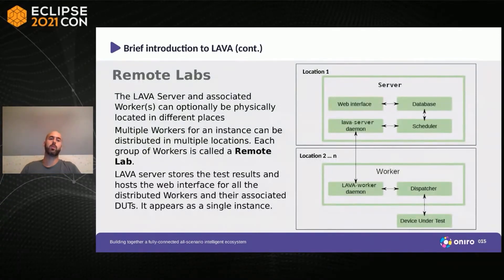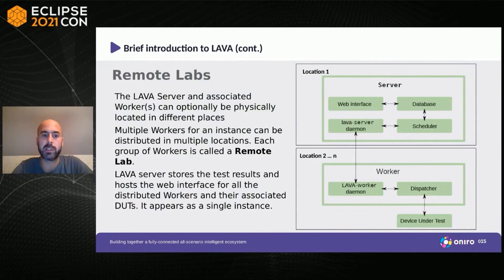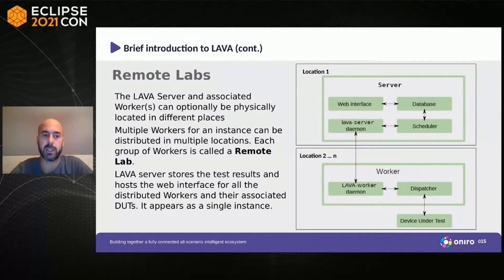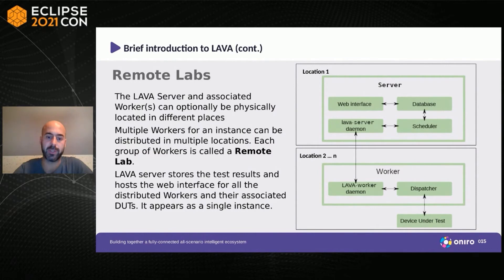A LAVA server and its associated workers can optionally be located in different physical places. Multiple workers for one instance can be distributed across multiple locations — each group of workers is called a remote lab. Each group can have multiple devices attached. The LAVA server collects and stores test results and hosts a web interface; it appears as a single instance but is anything but.